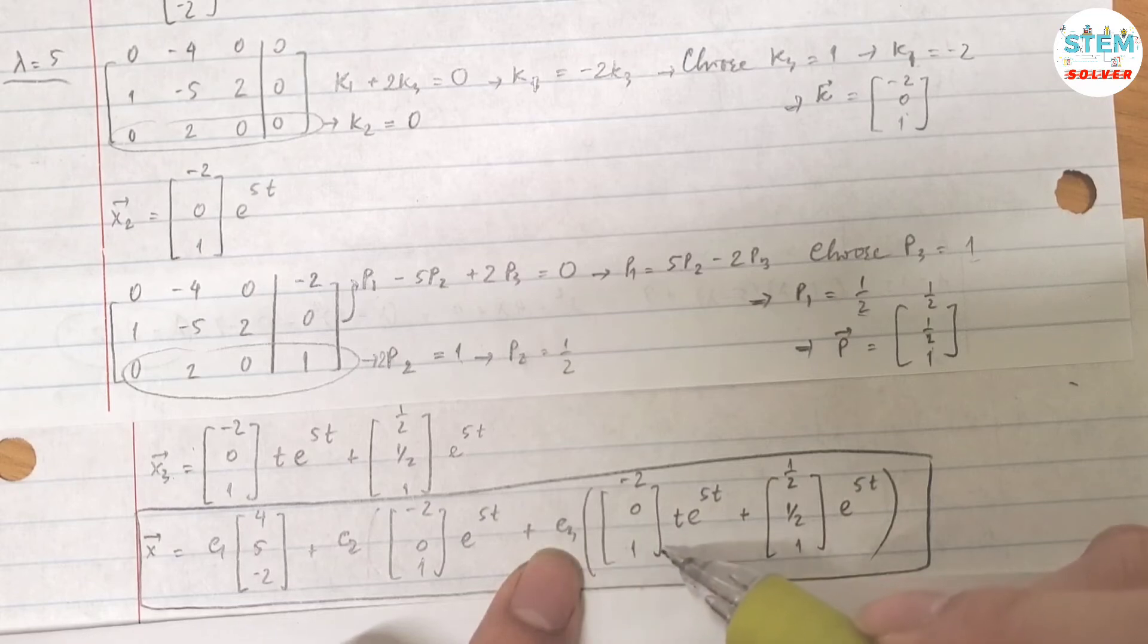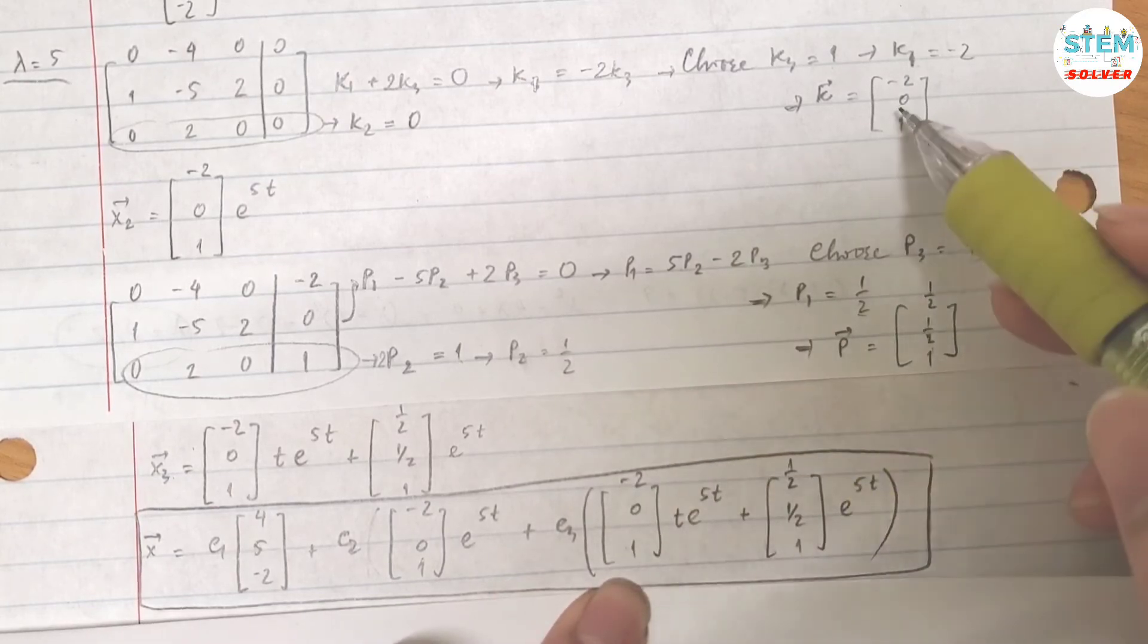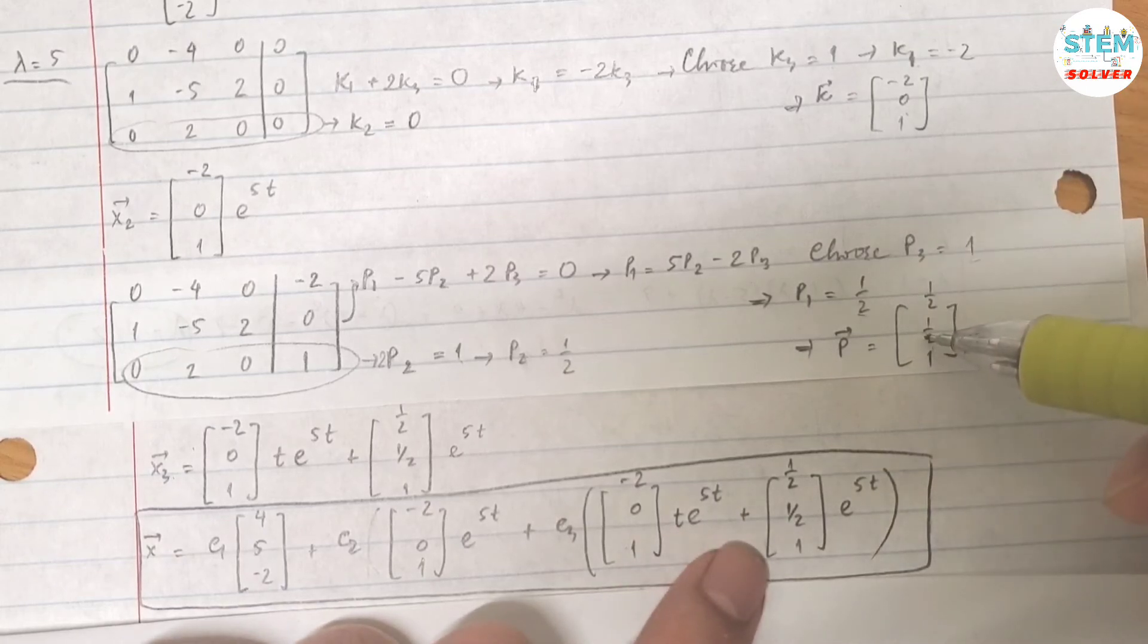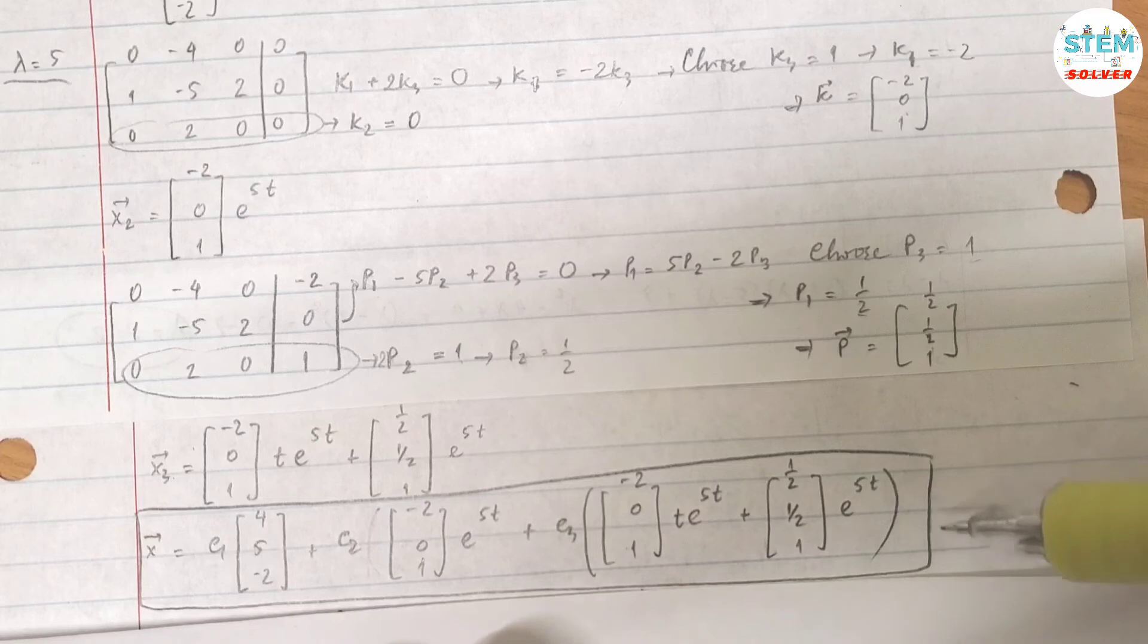So this answer is the answer for repeated eigenvalues. C3 times open parenthesis, this vector again times t e to the 5t plus P vector P times e to the 5t.